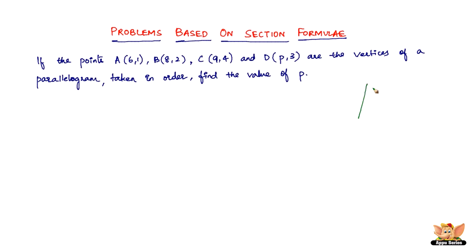So, this is how a parallelogram looks. We've got the vertices A, B, C, D. It's clearly mentioned it's taken in order, so this is 6, 1, this is 8, 2, this is 9, 4, and this is p, 3.